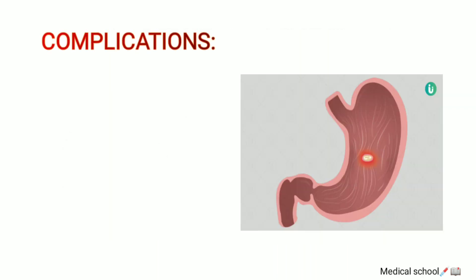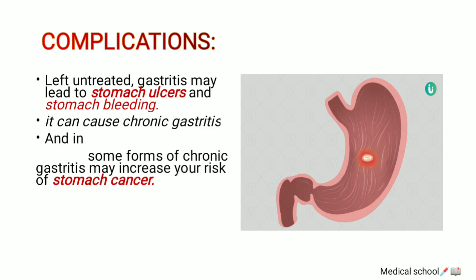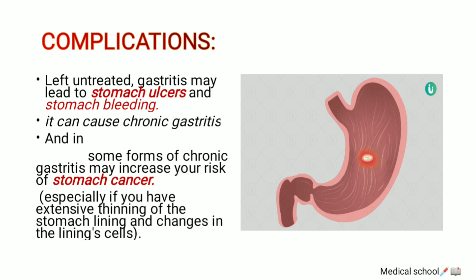Complications begin when this condition is left untreated. Gastritis may lead to stomach ulcers and stomach bleeding, and it can cause chronic gastritis as well. Some forms of chronic gastritis may increase your risk of stomach cancer, especially when there is extensive thinning of the stomach lining and changes in the lining's state.